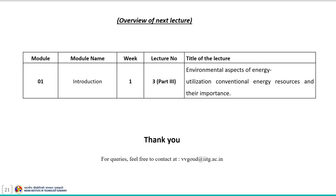So this together describes the cell wall components in the biomass structure — mainly cellulose, hemicellulose and lignin. With this we end our lecture here. In the next lecture we will discuss about environmental aspects of energy utilization of conventional energy resources and their importance. If you have any doubt regarding this lecture, feel free to contact me at vvgoud at iitg dot ac dot in. Thank you.